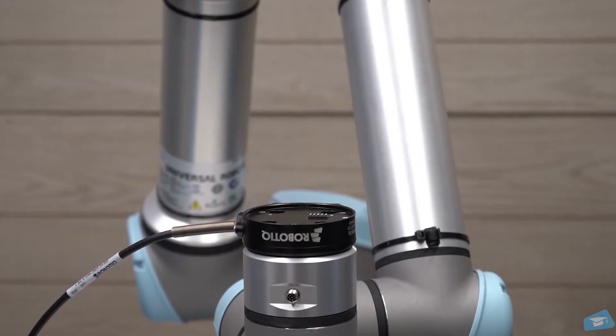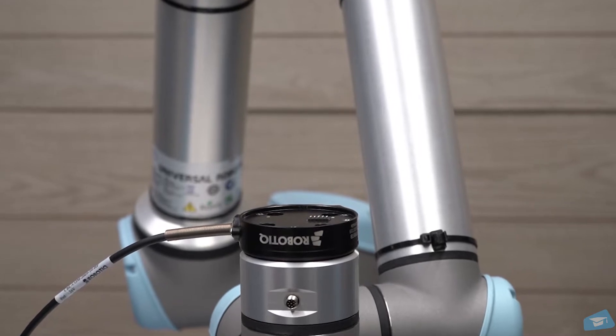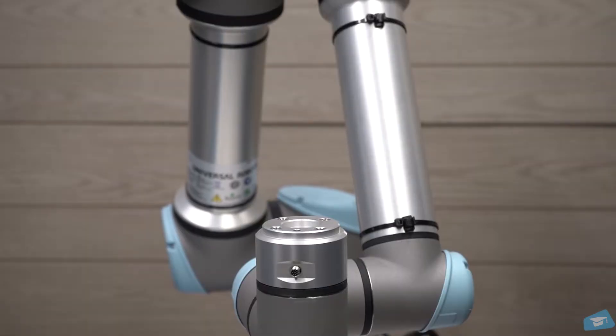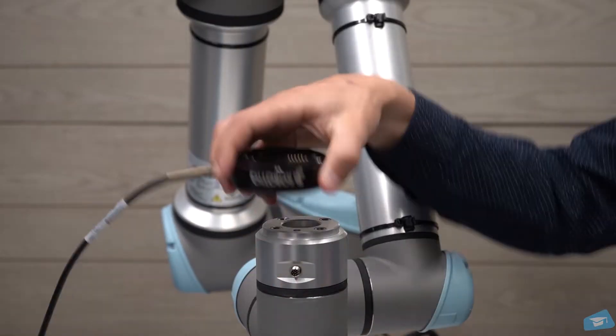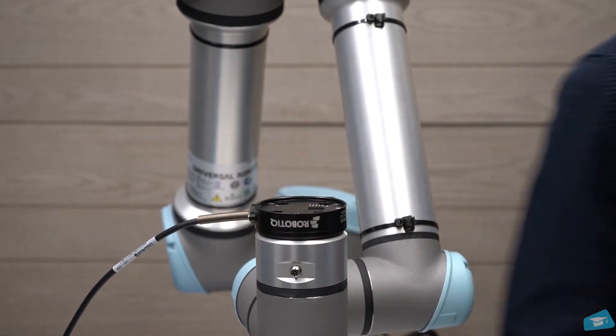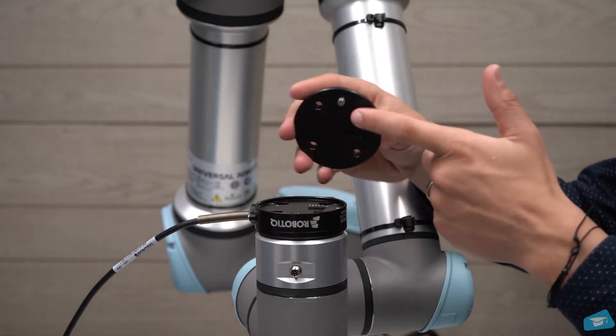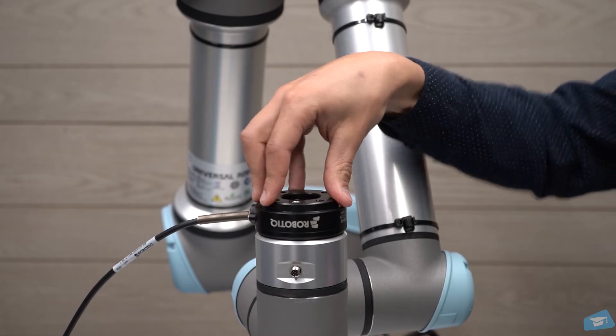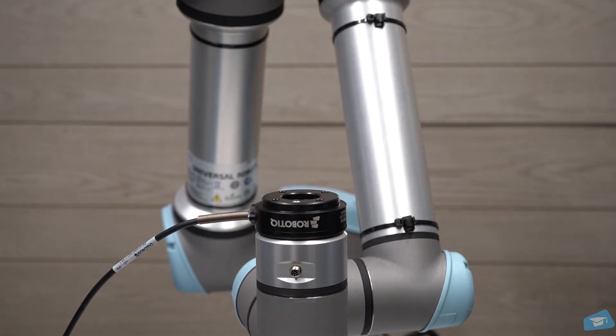The following steps apply for the wrist camera installation. Align the dowel pin that is already installed on the wrist camera with the hole on the tool flange. Install the tool plate by aligning the dowel pin on top of the camera.